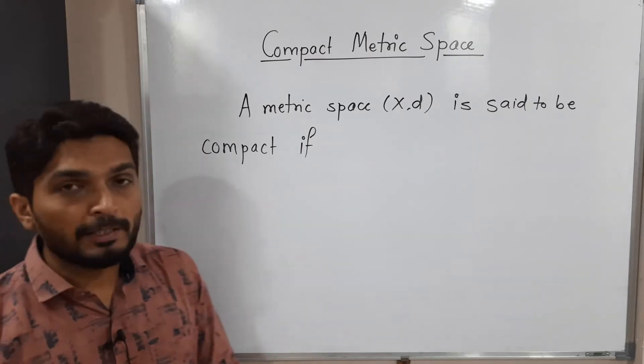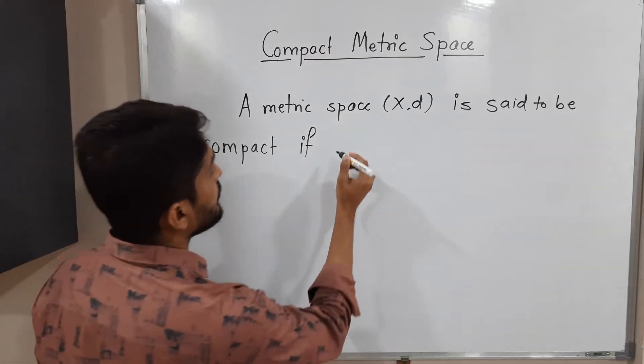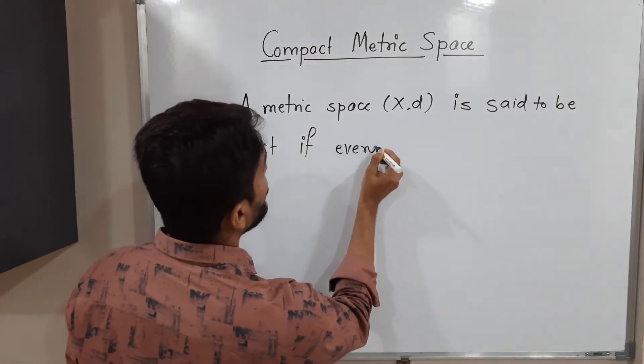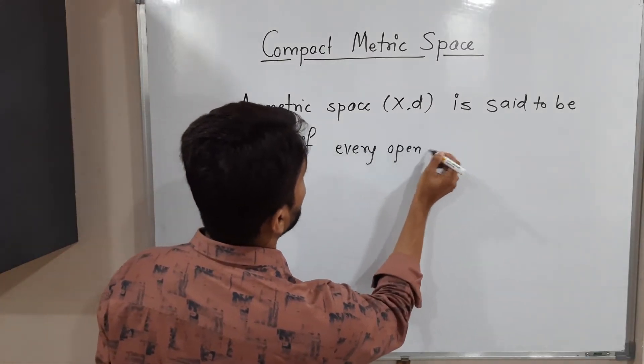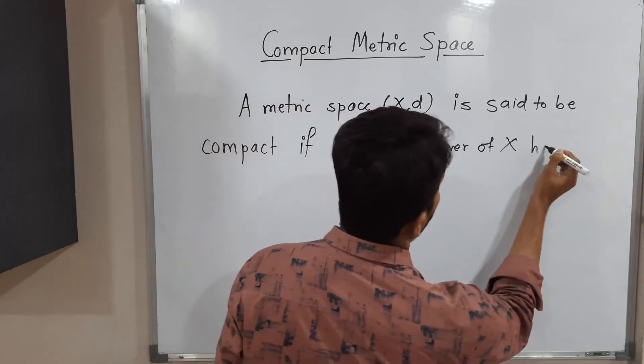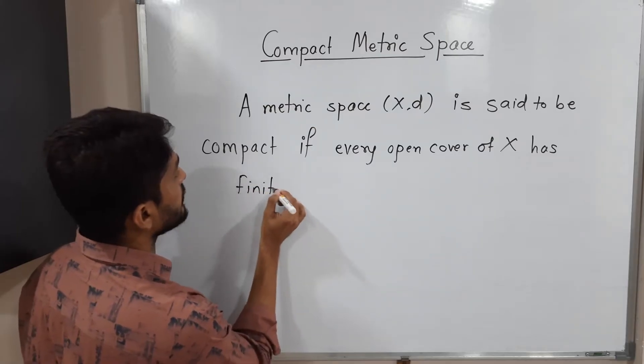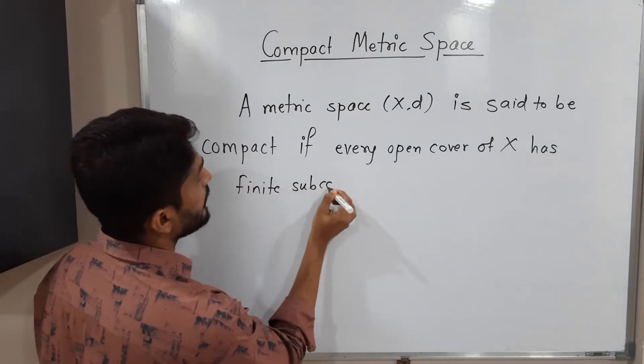A metric space (X,d) is said to be compact if every open cover of X has a finite subcover.